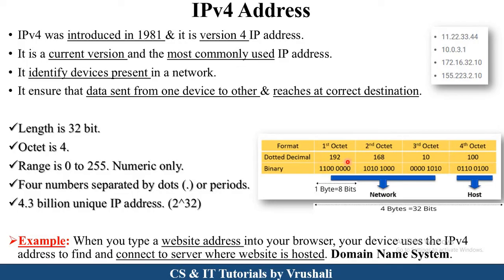This address is in decimal form. When you convert each decimal number into binary format, each octet becomes 8 bits — so 192 is 8 bits, the next is 8 bits, the next 8 bits, and the last 8 bits — meaning the total length of the complete address is 32 bits. So IPv4 address length is 32 bits with four octets. The IPv4 address range is 0 to 255, and only numeric digits are present. There are 4.3 billion devices using unique IPv4 addresses.